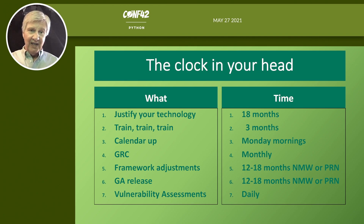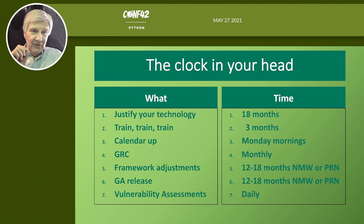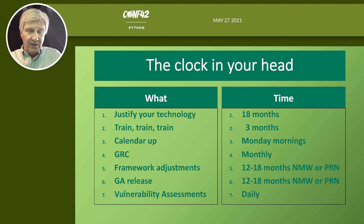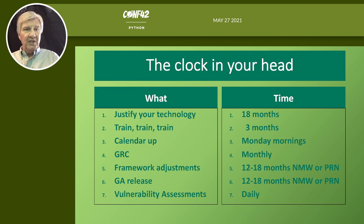I always have a clock in my head, and not everyone does. Have your teams justify their technology every 18 months — because Moore's Law has been halved, new products, software updates, and patches that materially affect operational capability come about every 18 months. Training: every three months, each member of your team must go to training.